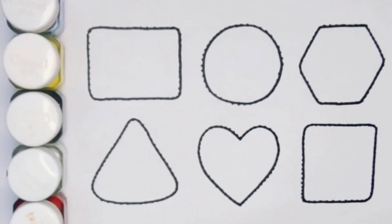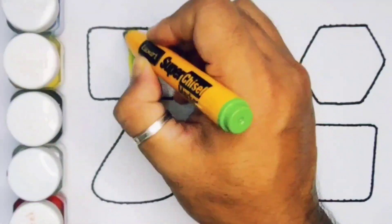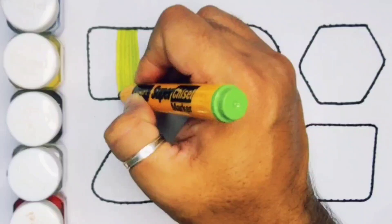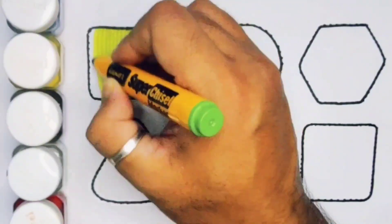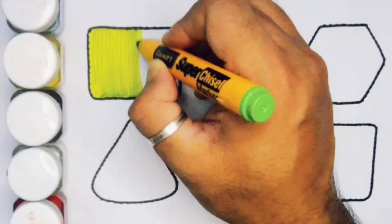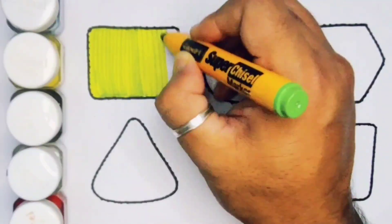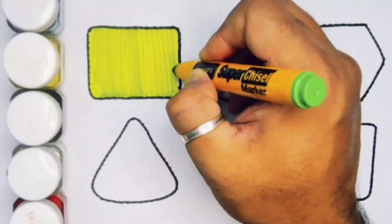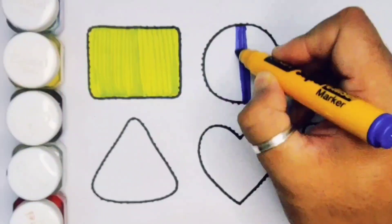Now we're going to put the color. Green color rectangle. Next, blue color circle.